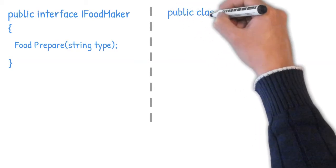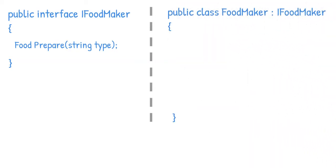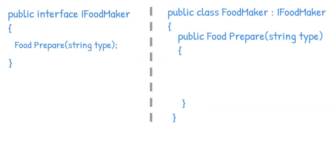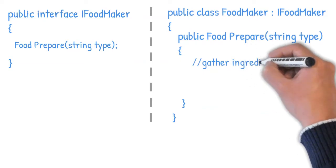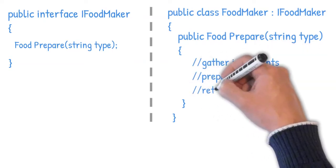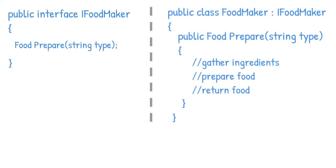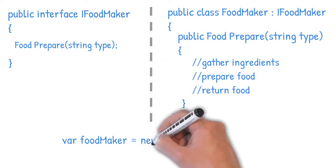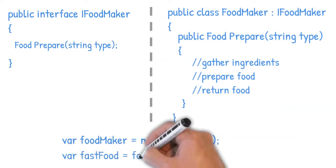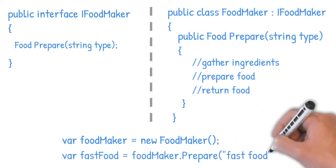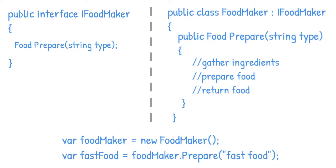We are now going to build our food maker by implementing IFoodMaker. We have to define the prepare method with the logic that helps the food maker build the food. Let's assume we wrote a program that gathers ingredients and prepares the food, returning the food at the end. The consumer creates an instance of food maker and invokes the prepare method — our first food maker is ready to sell.